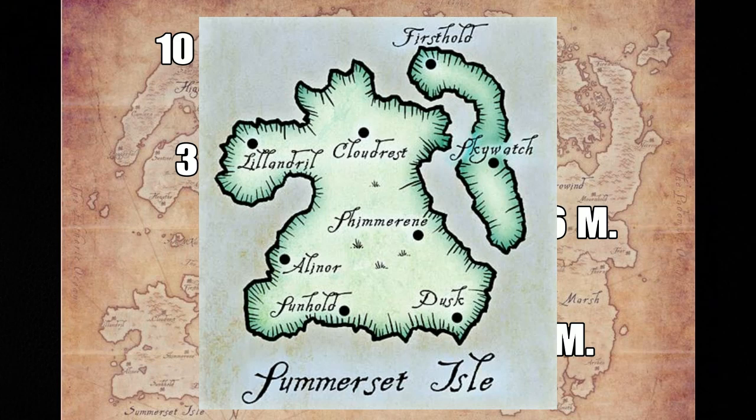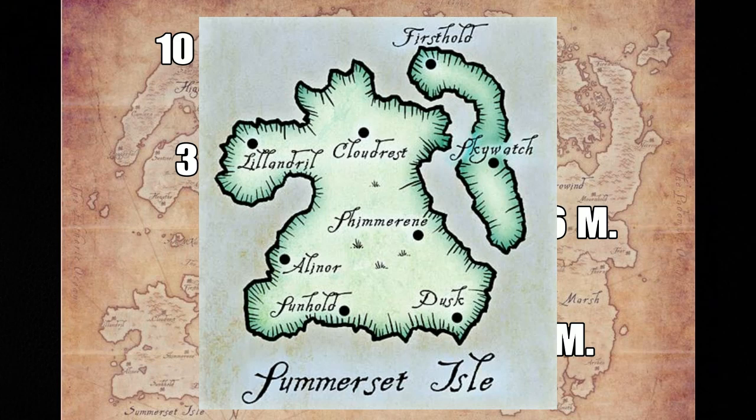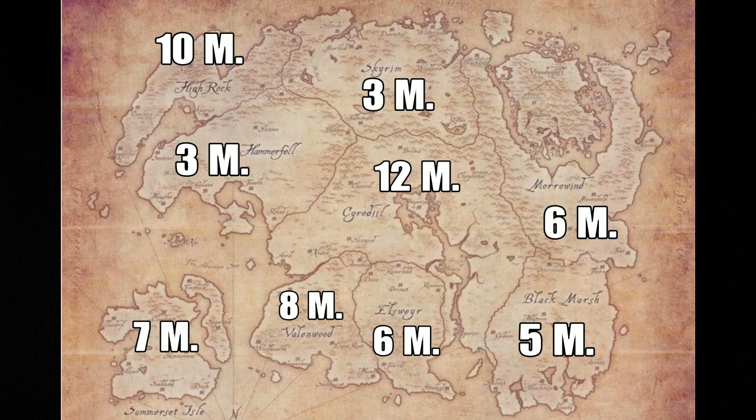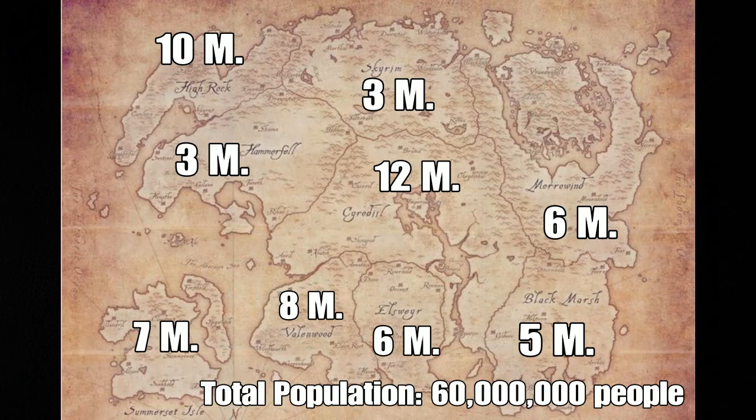The Summerset Isles took a blow during the Great War in terms of military losses, but their civilians weren't facing total destruction. I'd put the Summerset Isles at about 7 million — not quite as much as Valenwood, but still rivaling it. This makes sense as to why the Summerset Isles wants Valenwood and why it can rival the highest-populated elven province.